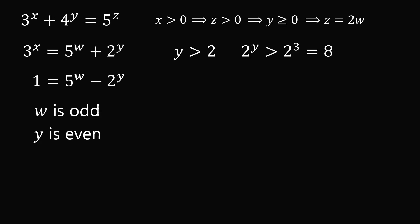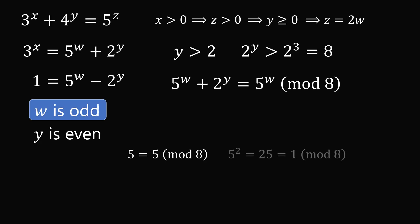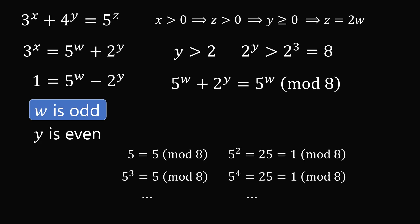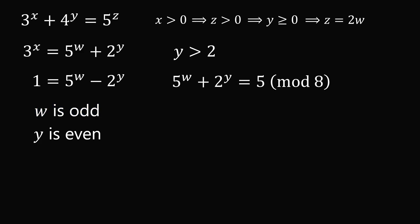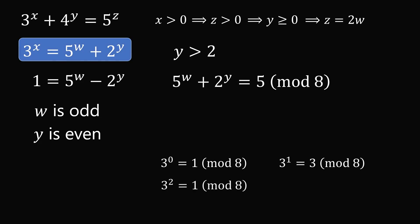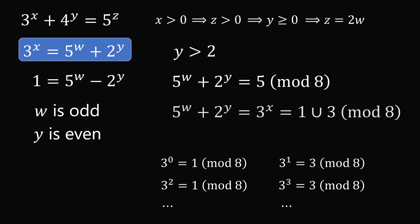If y were an even number greater than 2, then 2 to the power of y would be greater than 8. So let's analyze 5 to the power of w plus 2 to the power of y modulo 8. On the one hand, it equals 5 to the power of w modulo 8, and since w is an odd number, 5 to the power of w must equal 5. But 3 to the power of x is either equal to 1 mod 8 or 3 mod 8. This is a contradiction — so we cannot have y greater than 2.